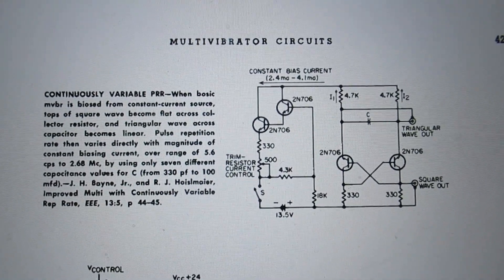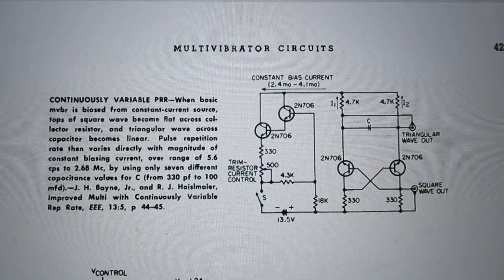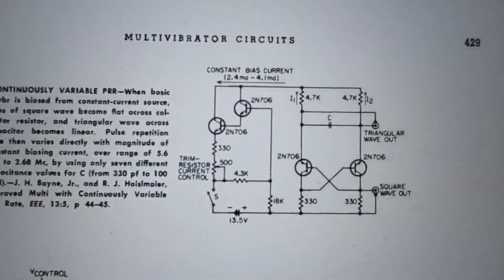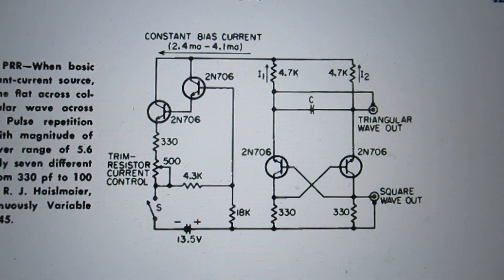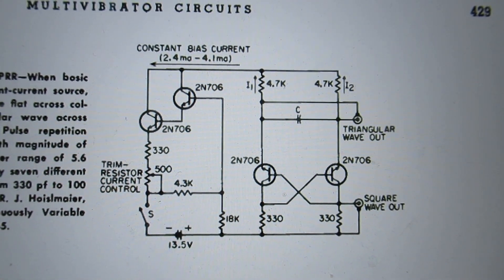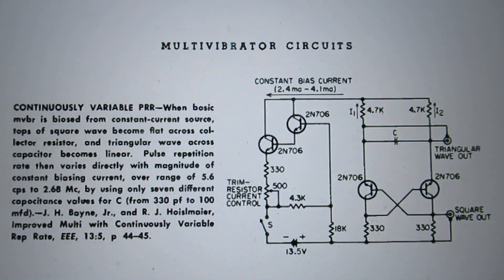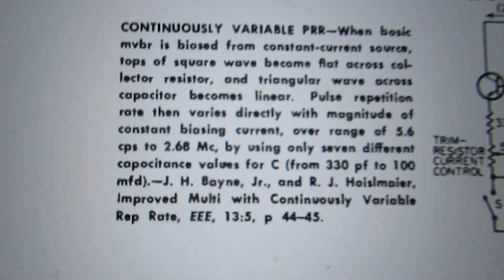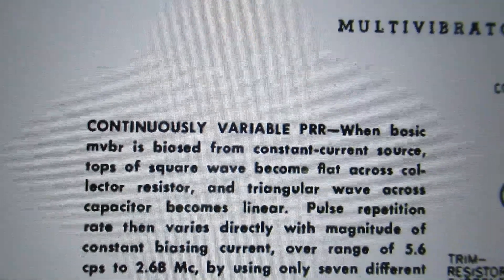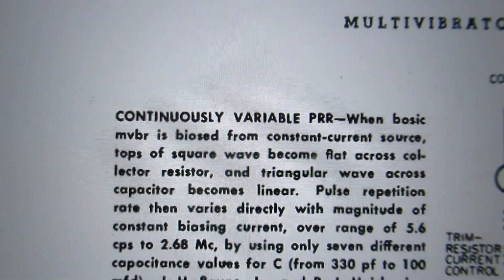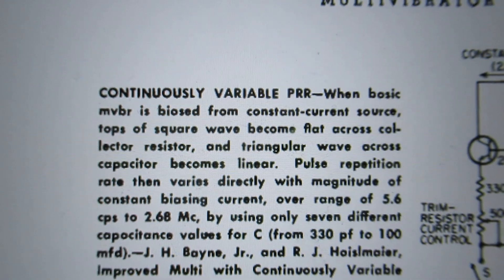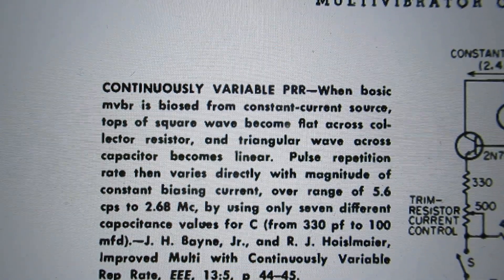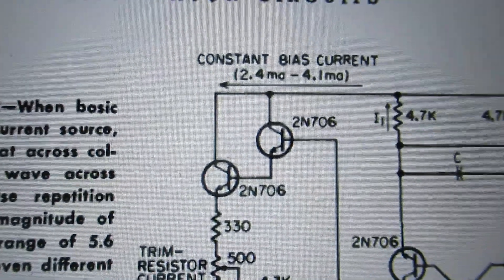On the worldradiohistory.com website, this schematic. My idea was that it was very interesting because they tell here this is continuously variable, and it is biased from a constant current source. This is the constant current source.